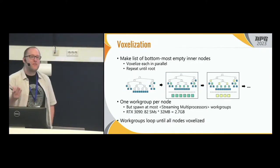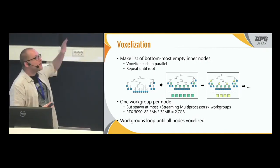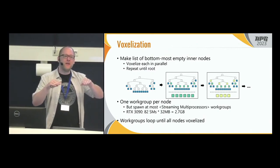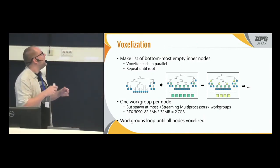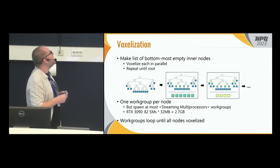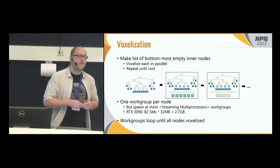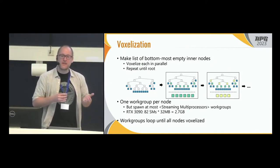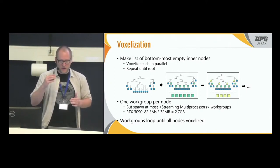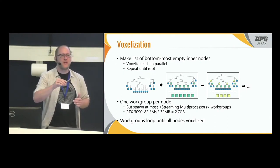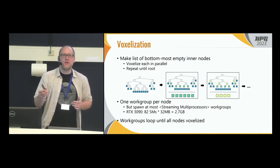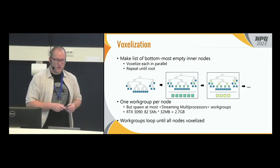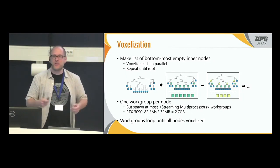To parallelize on the GPU, once we have all the points in the leaf nodes, we create a list of all the bottom-most nodes that are still empty, and process each in parallel — one workgroup per node. We make sure not to spawn too many workgroups, because each workgroup needs a sampling grid to voxelize a node, and each sampling grid requires 42 megabytes. So we spawn as many workgroups as there are streaming multiprocessors on the GPU. On an RTX 3090, this requires about 2.7 gigabytes for the sampling grids. All workgroups loop through unprocessed nodes until all are processed.